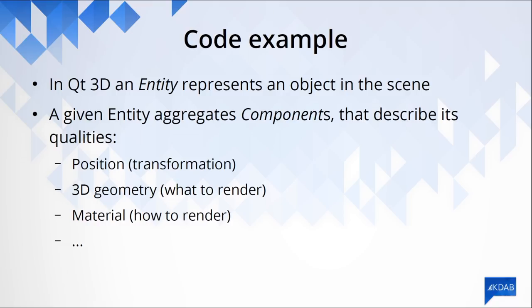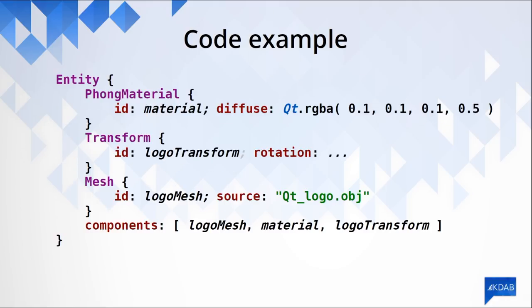This entity component system is basically translated directly into code. In QML — which is exactly the same as C++ — what we do is create an entity, create a few components for it, and aggregate those components in the components property of the entity. This particular entity has three components: a material which is a Phong material performing Phong shading, a transformation that perhaps rotates the entity along some axes, and some 3D geometry loaded from a file on disk — a mesh that comes out of an OBJ file.